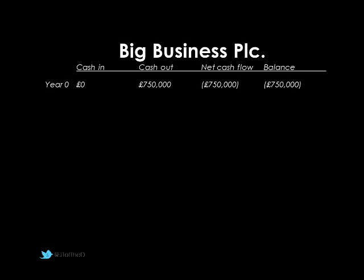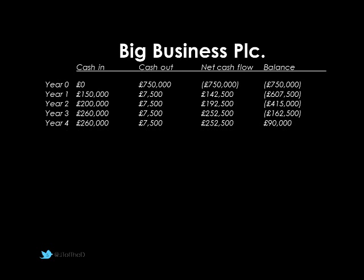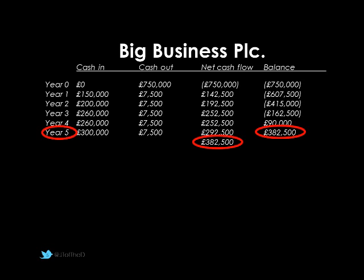In year zero, we have no money coming in — year zero is right now — so we lay out the initial investment of £750,000, hence our negative cash flow, and our cumulative balance is shown at the end. Year one: £150,000 comes in with a cash outflow of £7,500, giving a positive cash flow of £142,500, and our cumulative total is now reduced to £607,500. Year two brings more net inflow, bringing the balance down to £415,000. Year three takes it down to £162,500. By year four we're starting to pay back, and at the end of year four we've actually made a return of £90,000 — so if we ceased trading we'd have some profit.